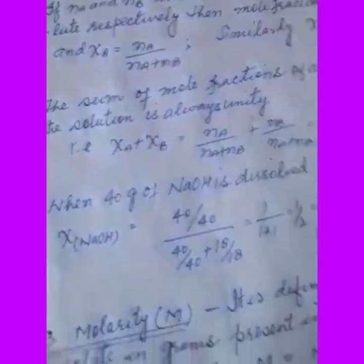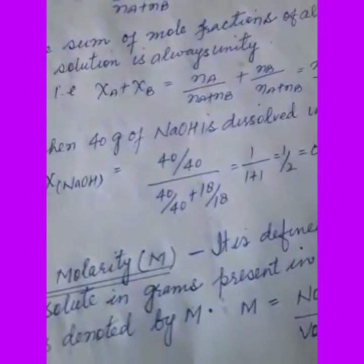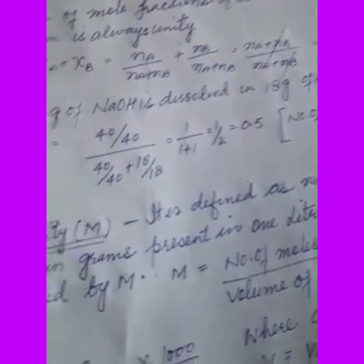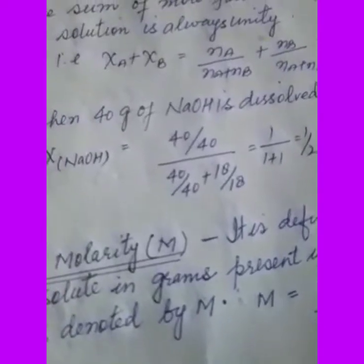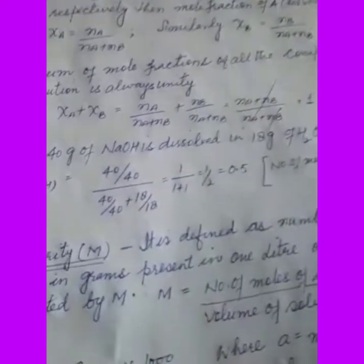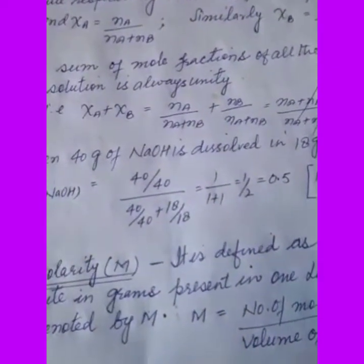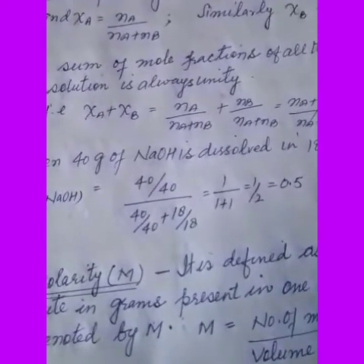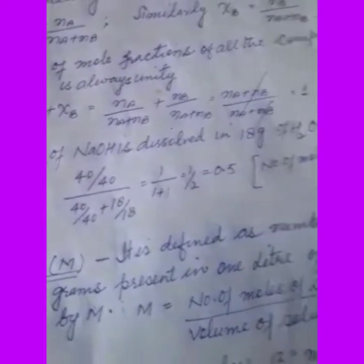For example, if 40 grams of sodium hydroxide is dissolved in 18 grams of water, the mole fraction of sodium hydroxide equals (40/40) divided by (40/40 + 18/18), which equals 1/2, equal to 0.5.